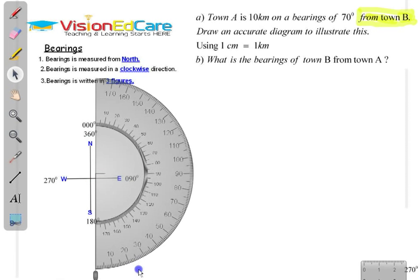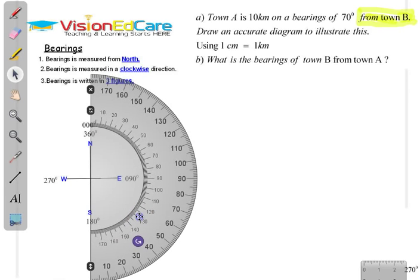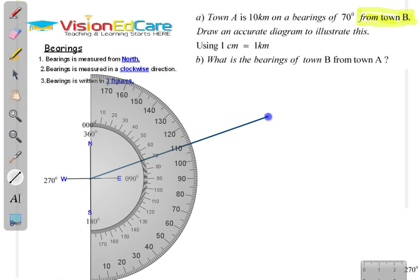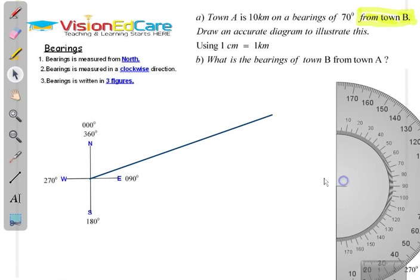Here is our protractor. Bearing is measured from north in a clockwise direction, so north is here. Clockwise direction — we need to measure 70 degrees. We line up our protractor: zero here, center at town B. So we are starting from town B. We measure 70 degrees — 70 degrees is along this line here. We put in our 70 degrees, measured from north in a clockwise direction, and that's 070 degrees.